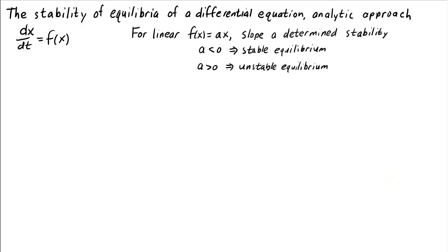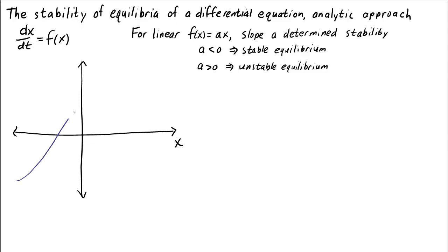So at least for a linear differential equation, the slope determines the stability of an equilibrium: negative slope means stable, positive slope means unstable. Will that work for a nonlinear function f of x? A nonlinear function isn't as simple as a linear one because it has different slopes — the slope changes with x. Which slope would be the relevant one for determining stability of an equilibrium?